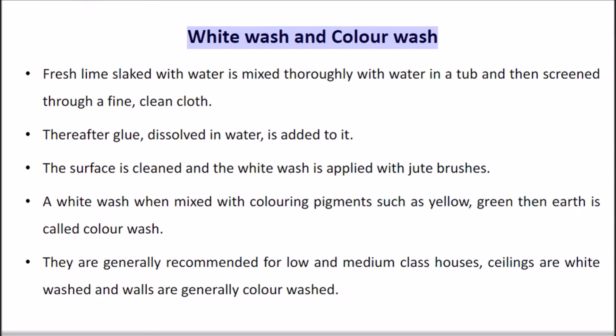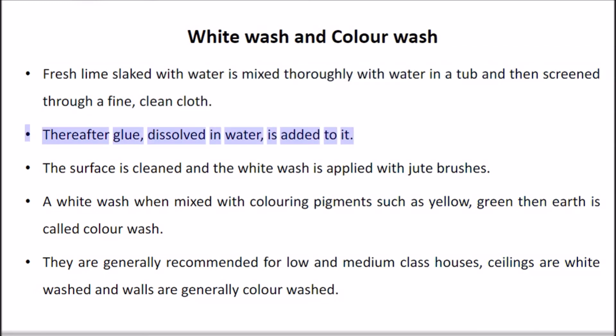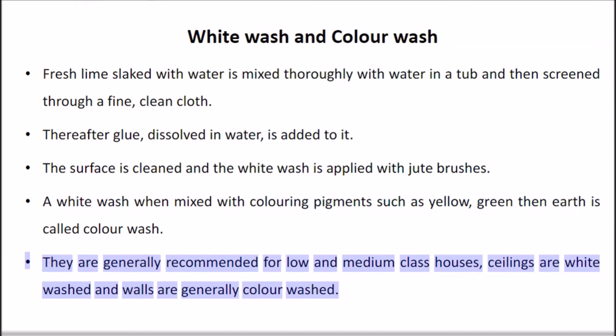For white wash, fresh lime slaked with water is mixed thoroughly and screened through a fine clean cloth. Glue dissolved in water is added to it. The surface is cleaned and the white wash is applied with jute brushes. When white wash is mixed with coloring pigments such as yellow or green earth, it is called color wash. White wash and color wash are generally recommended for low and medium class houses; ceilings are whitewashed and walls are generally color washed.